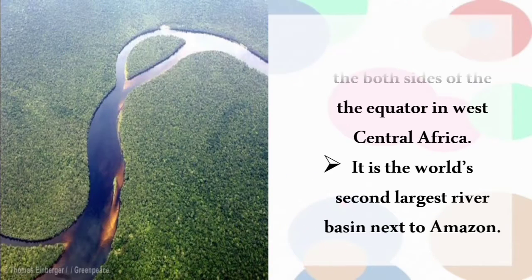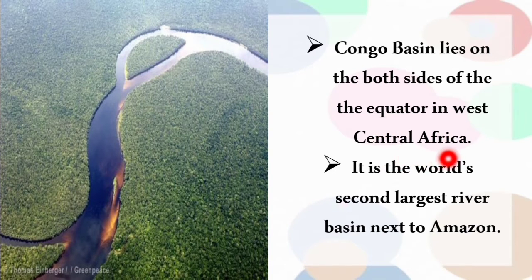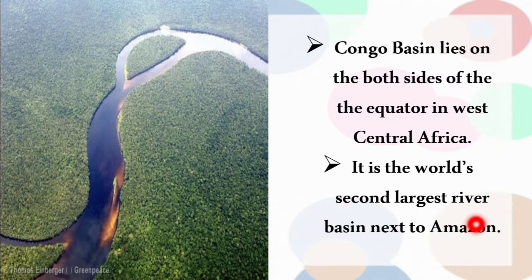The Congo Basin, also known as the Zaire Basin, lies on both sides of the equator in West Central Africa. It is the world's second largest river basin, next to the Amazon.